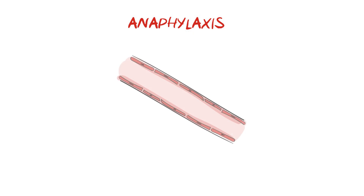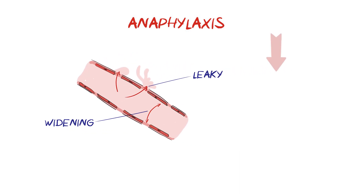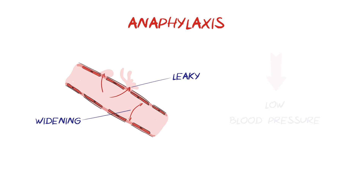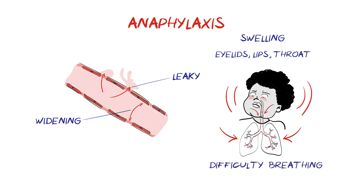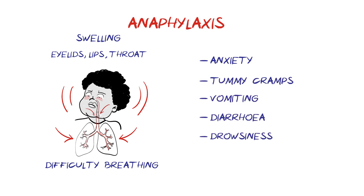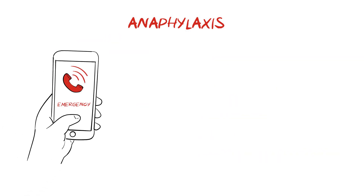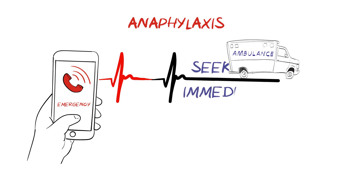Called anaphylaxis. In anaphylaxis, an extreme reaction of the immune system leads the blood vessels to widen and become leaky, dangerously lowering blood pressure. The eyelids, lips or throat can swell up and the airways can tighten, leading to difficulty breathing. Other effects may include anxiety, tummy cramps, vomiting, diarrhea, drowsiness and loss of consciousness. Anaphylaxis is a medical emergency that can be fatal if not treated promptly, so it's important to seek help immediately.